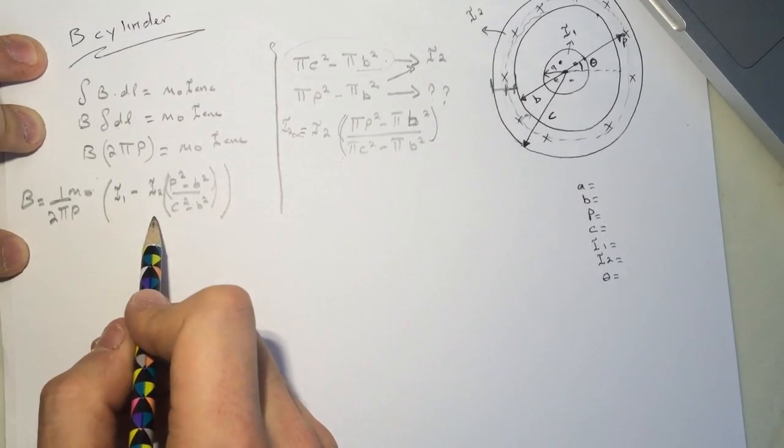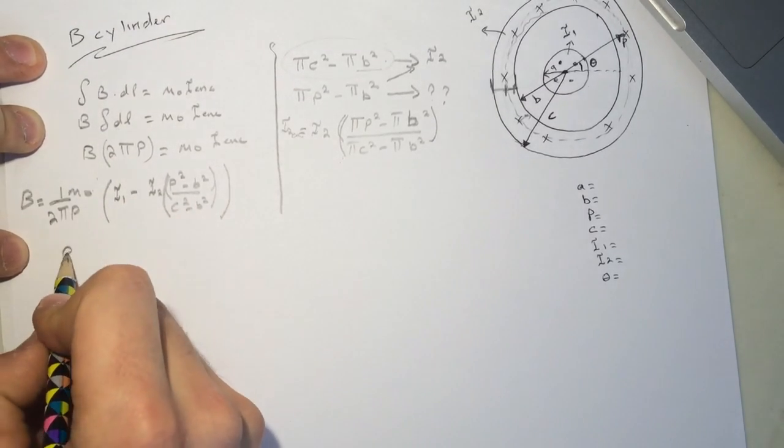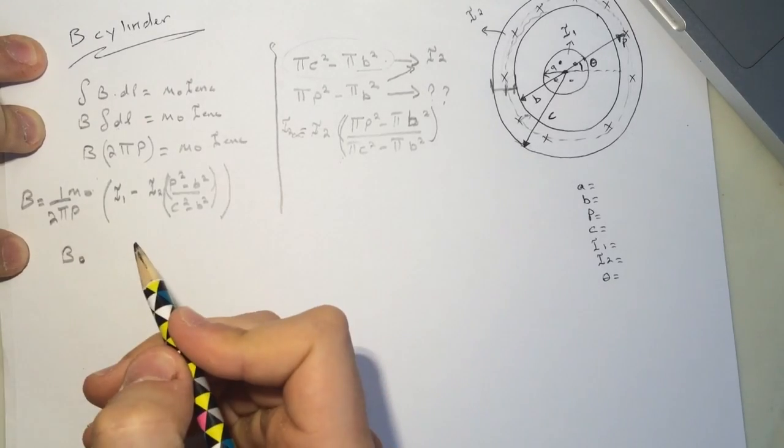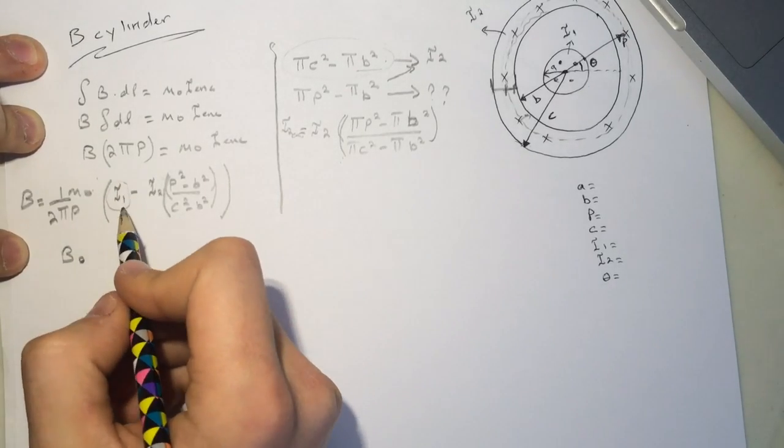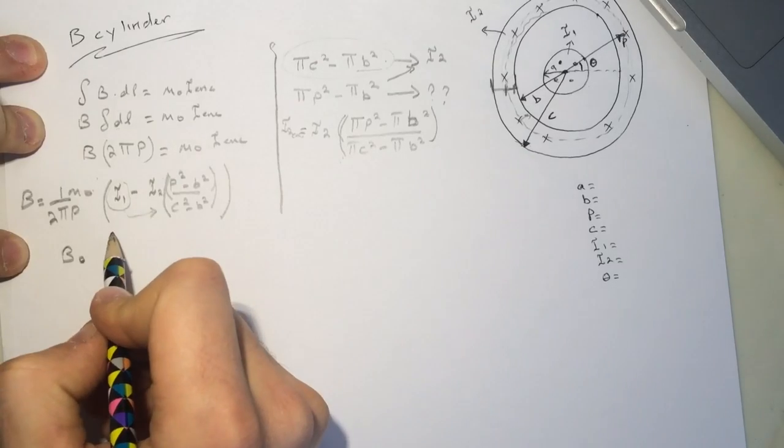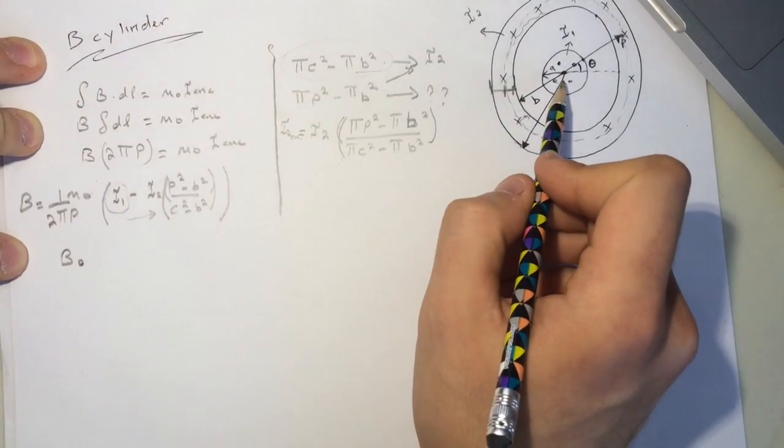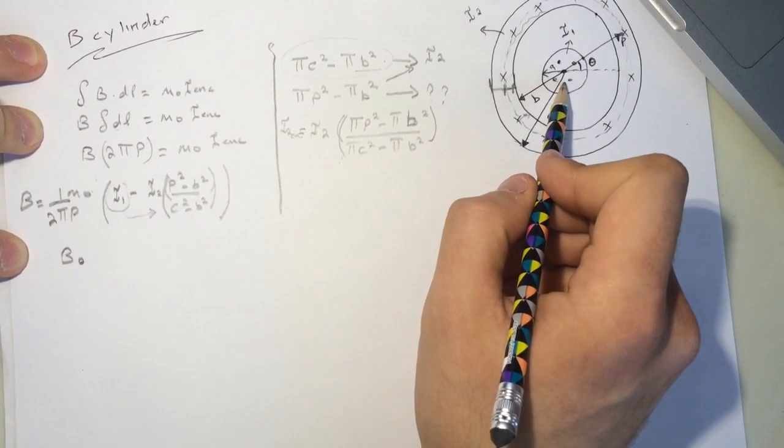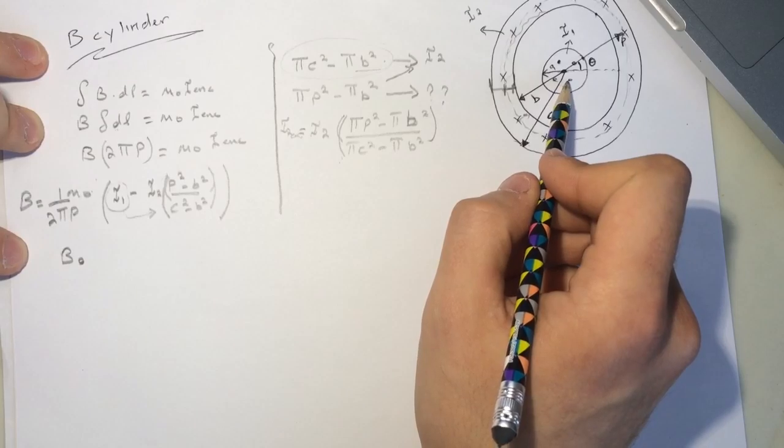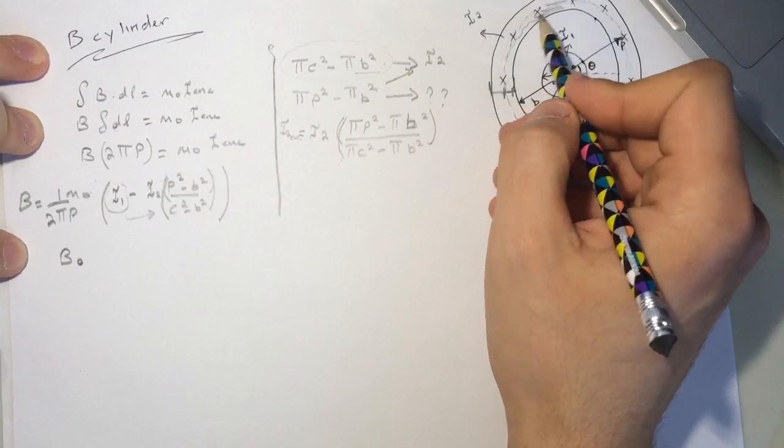Alright, once you get this value with the b, this is the b0, I'll call it. And mine was that this guy was bigger than this guy. So the magnetic field from the inside current was bigger than the part of this here.